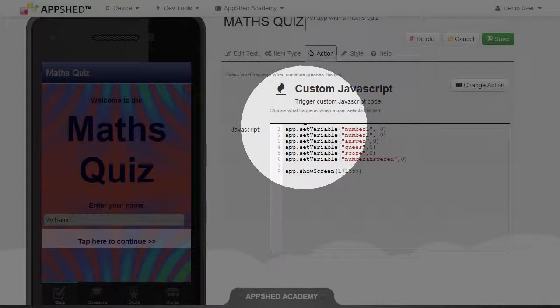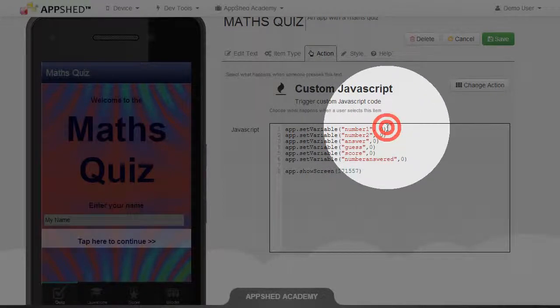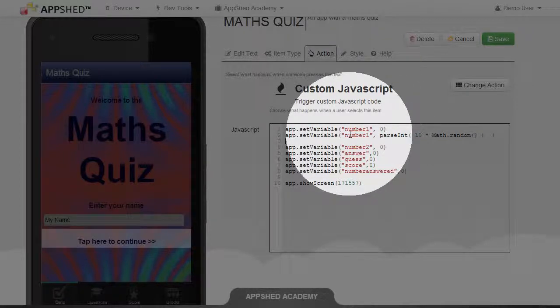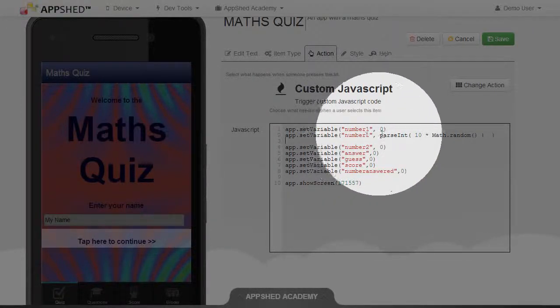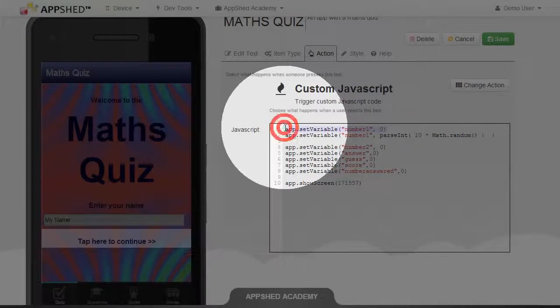Now, instead of setting the variable number 1 to 0, I'm going to paste in this code that I just copied. I'm going to set number 1 to a random integer, so I can delete that first line.